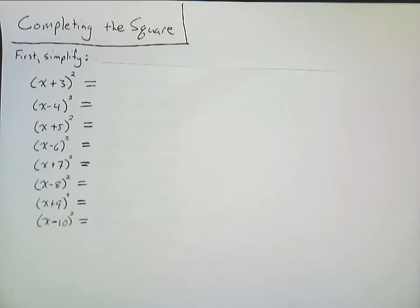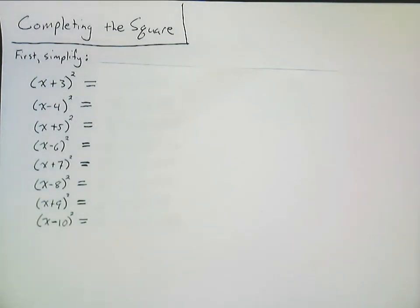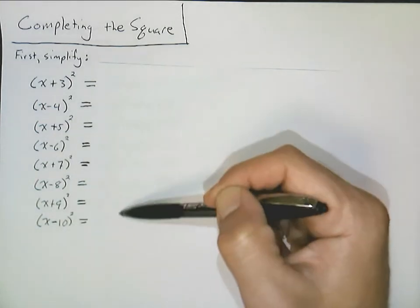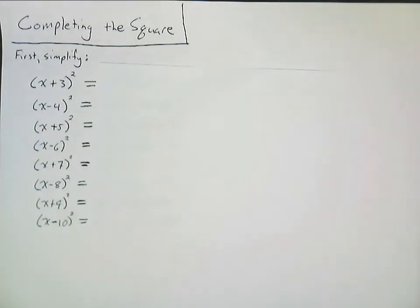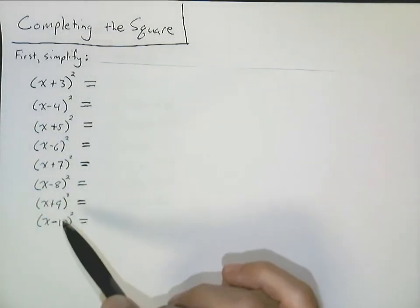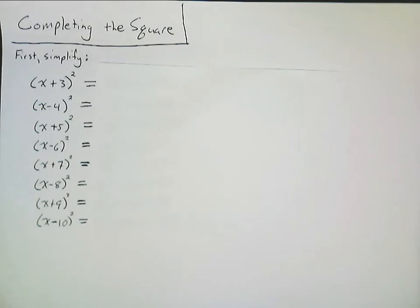This is how to solve a quadratic equation when there is a b times x term in the equation. But before we get to that, what I need you guys to do is go ahead and simplify each of these expressions here. Go ahead and hit pause on the video and multiply each of these expressions out, and then we're going to check them in just a sec. So pause the video right now.